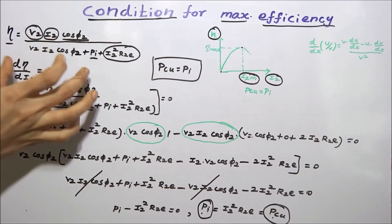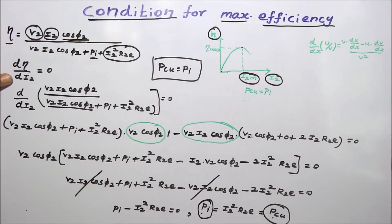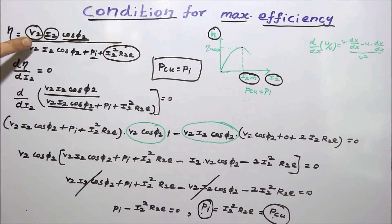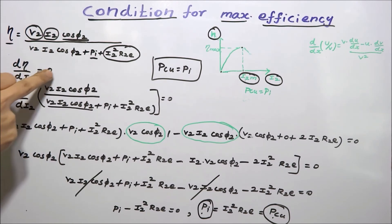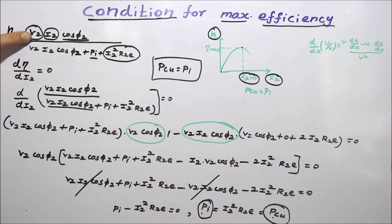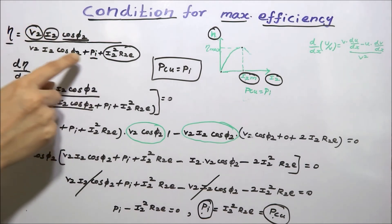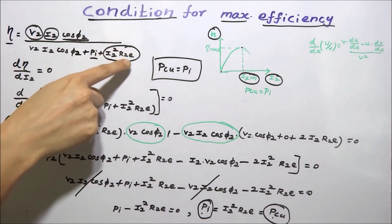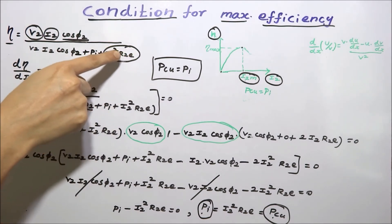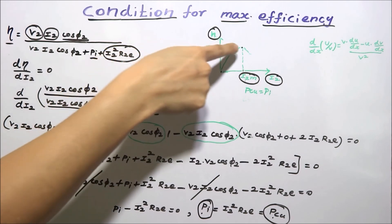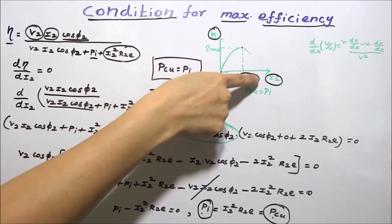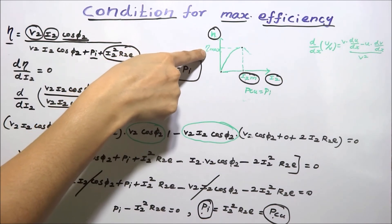In summary, we differentiate the efficiency equation with respect to I2 and equate to 0, because efficiency is a function of I2 and varies with load. We assume V2 and cos(φ2) are constant parameters. Pi is the iron loss, I2²·R2E is the copper loss, and R2E is the equivalent resistance referred to the secondary side. I2M is the load current at which efficiency reaches its maximum value, denoted η_max.